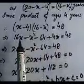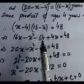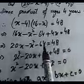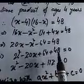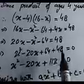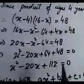Expanding: x multiplied by 16 gives 16x; x multiplied by minus x gives minus x square; minus 4 multiplied by 16 gives minus 64; minus 4 multiplied by minus x gives plus 4x. So 16x plus 4x gives 20x. Bringing all terms to one side: minus x square becomes plus x square, 20x becomes minus 20x, minus 64 becomes plus 64, plus 48 stays. Adding 64 and 48 gives 112. So the equation is x square minus 20x plus 112 equal to zero.